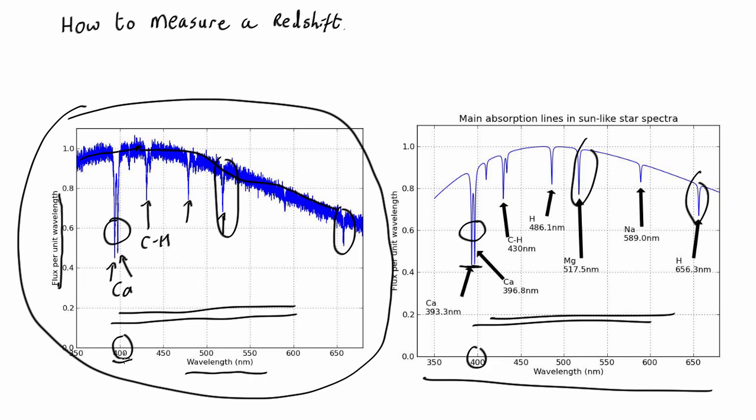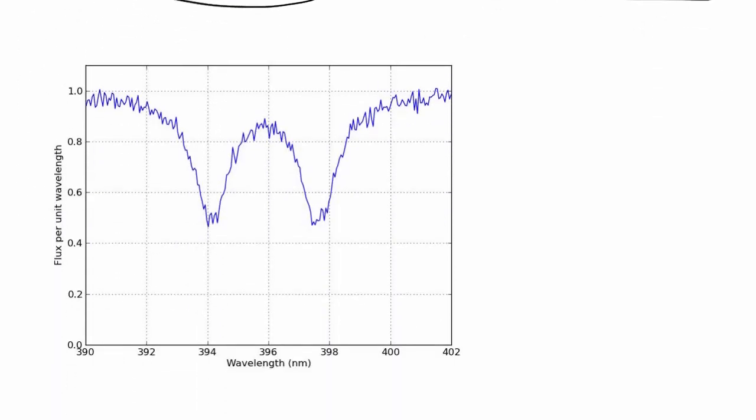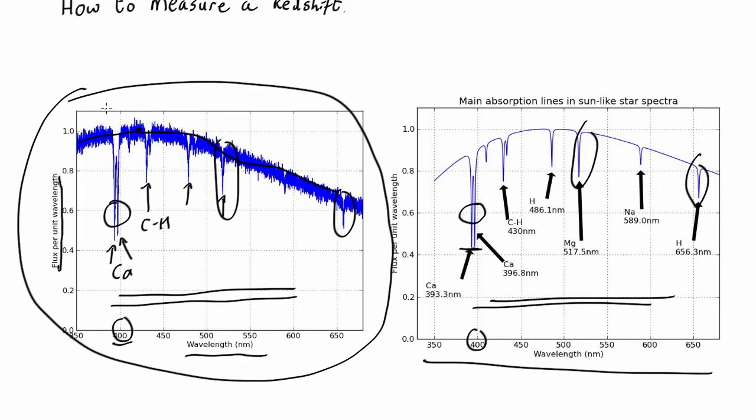Now on this scale it would be very hard to actually measure a redshift, so we need to zoom in. So here's a zoom in of the two calcium lines, these two lines here zoomed in.